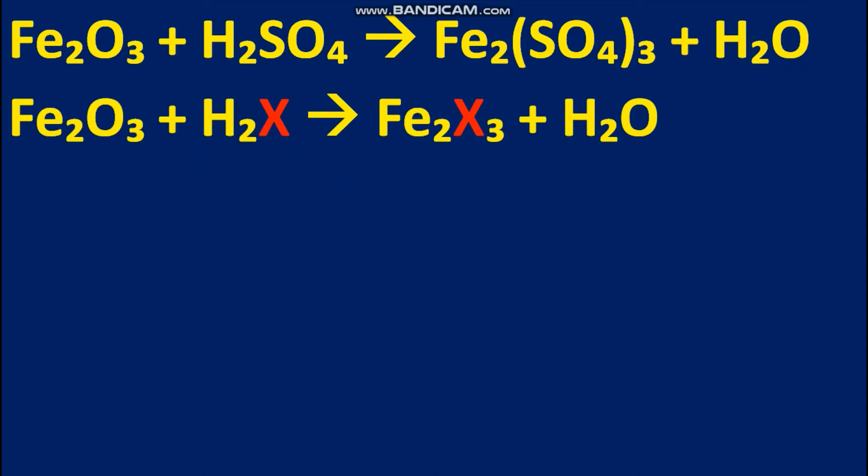First let's look at the iron. We have two on the left and two on the right. So that is balanced.